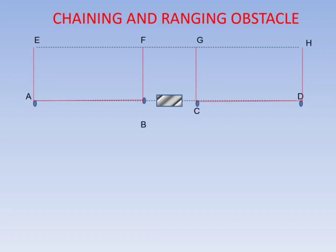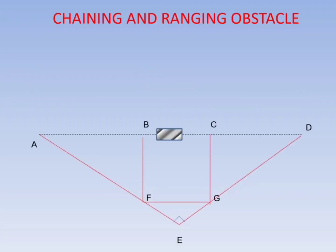If an obstruction exists for both chaining and ranging, rectangles are constructed by erecting perpendiculars at A, B, C, and D, and the lines are extended away from the obstacle so that the distance FG can be measured.